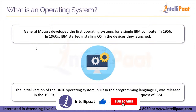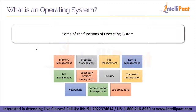These are some of the functions of operating systems: memory management, processor management, file management, device management, input and output management, secondary storage management, security, command interpretation, networking, communication management, and job accounting. All of these functions are elementary — basic functions that need to be carried out — and they are interdependent on each other. If one part of the function doesn't work, then the entire operating system will crumble.